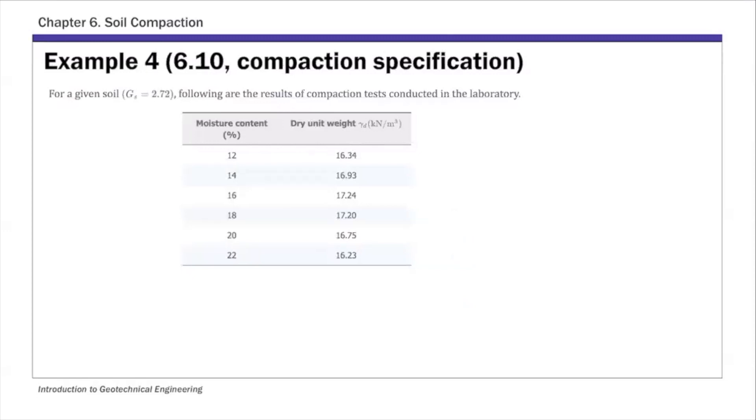So we have this last one example. This is example four, chapter six. This example is compaction specification.